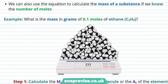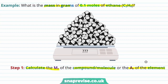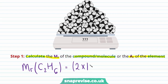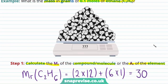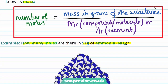We can also use this equation to calculate the mass of a substance if we know the number of moles we have. For example, what is the mass in grams of 0.1 moles of ethane, which has the chemical formula C₂H₆? The first step is to calculate the relative formula mass of ethane: 2 times the relative atomic mass of carbon, which is 12, plus 6 times the relative atomic mass of hydrogen, which is 1, giving a relative formula mass of 30 for ethane.